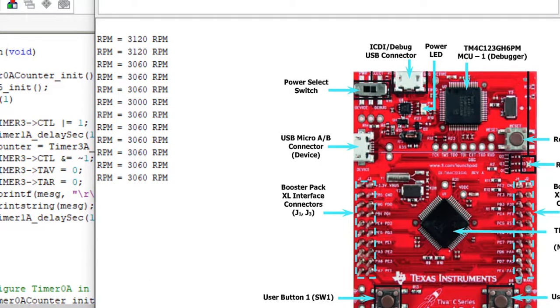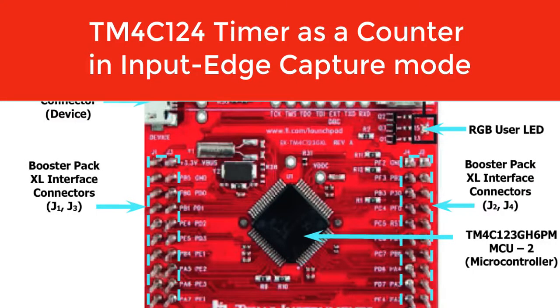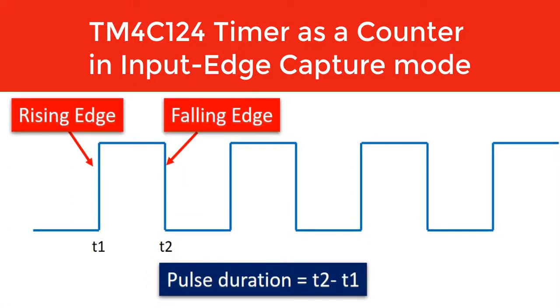In this project, timers of TM4C123 microcontroller is used as a counter in input edge count mode. The counter starts to count whenever an external event occurs on the input edge capture pin. The capture event can be a rising or falling edge of pulse. Now let's see how to use TM4C123 microcontroller counter to count pulses.